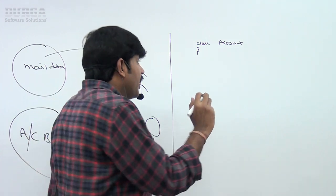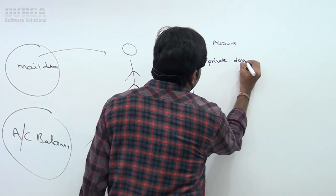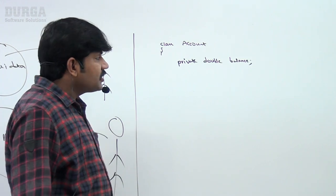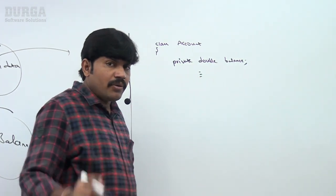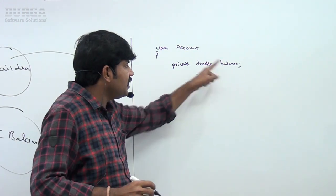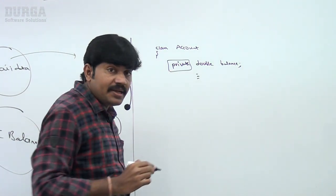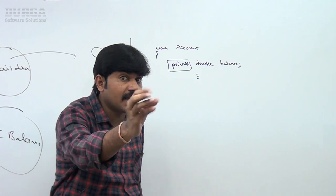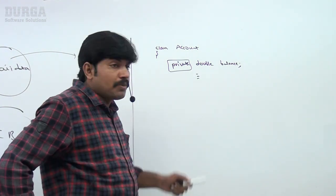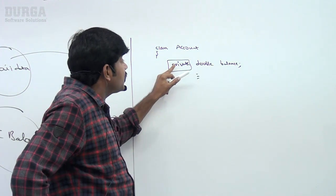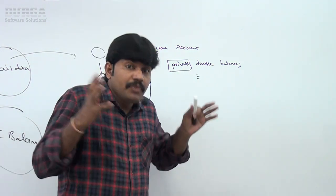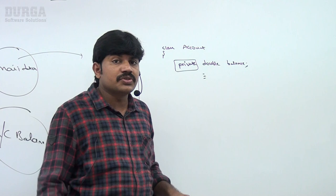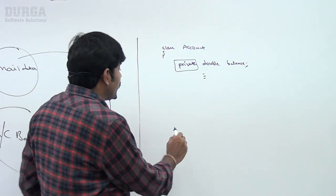Every account has a balance. Instead of declaring it as `public double balance`, we declare it as `private double balance`. By declaring this balance variable as private, we can implement data hiding. So how do you implement data hiding? By declaring the data member as private, we make it inaccessible to outside persons. This variable can be used just for internal purposes only.